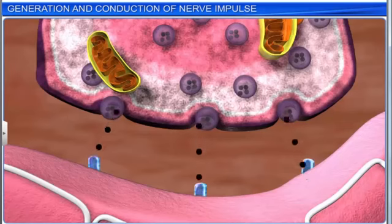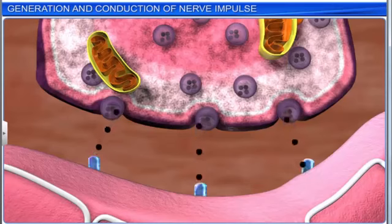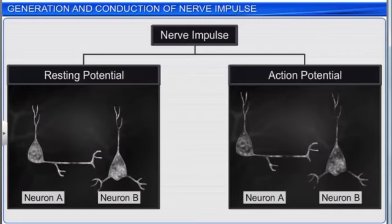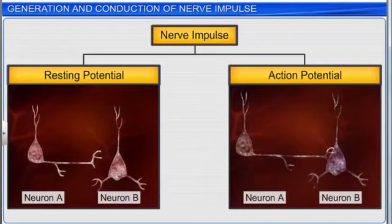The nerve impulse is the sum of mechanical, chemical, and electrical disturbances created by a stimulus in a neuron. The conduction of the nerve impulse can be divided into two main phases: resting membrane potential and action membrane potential.